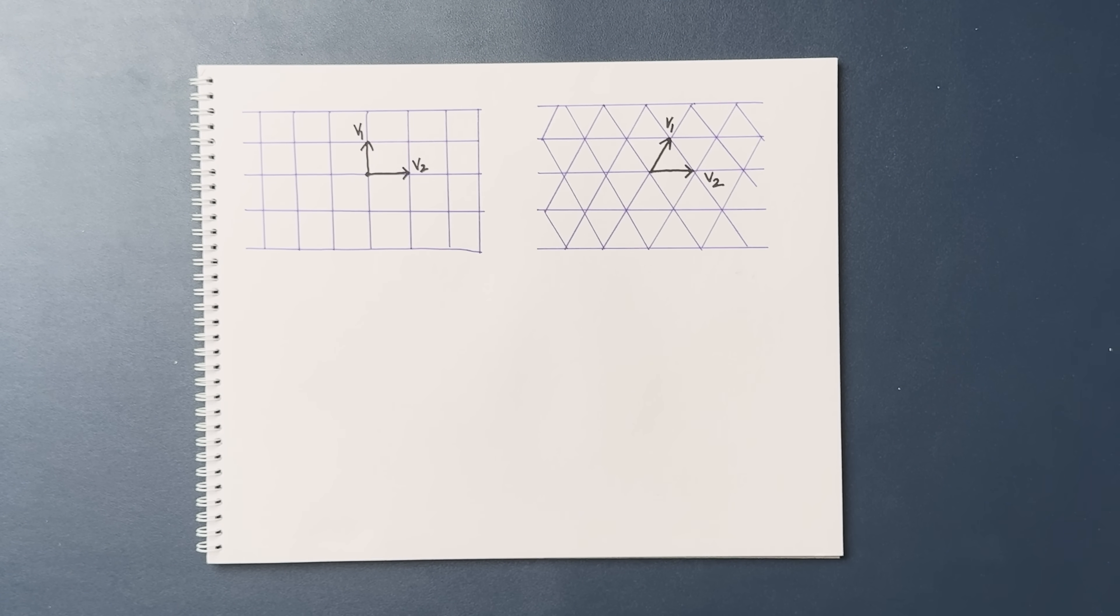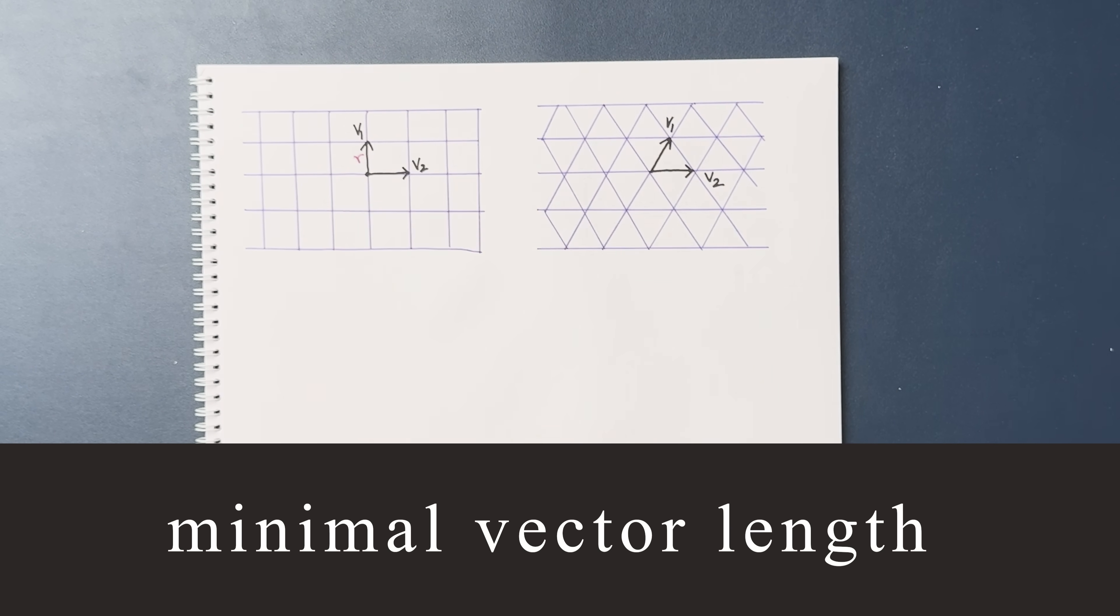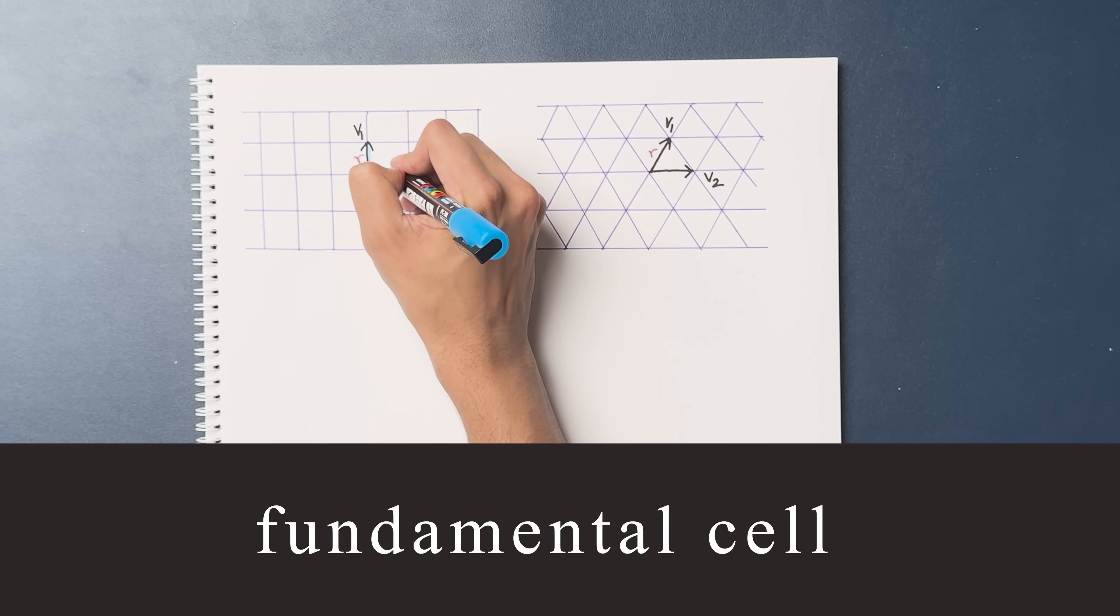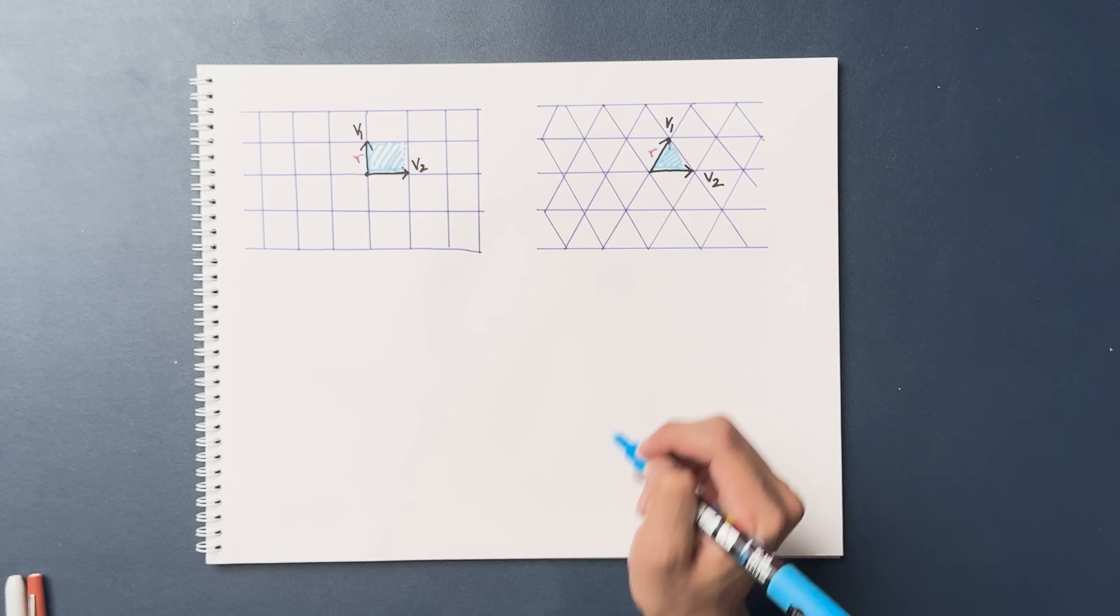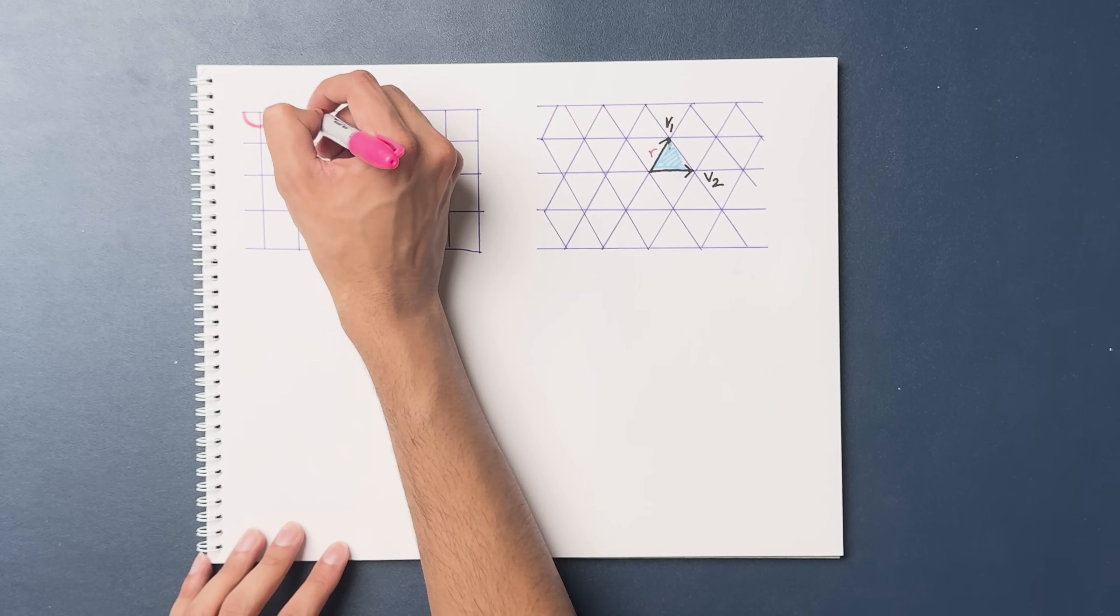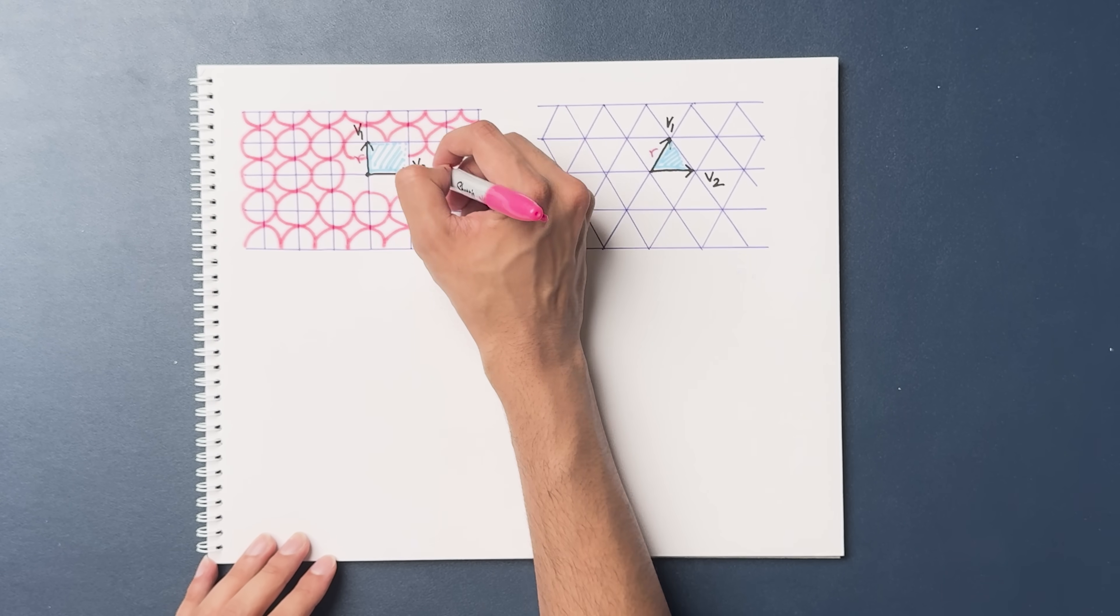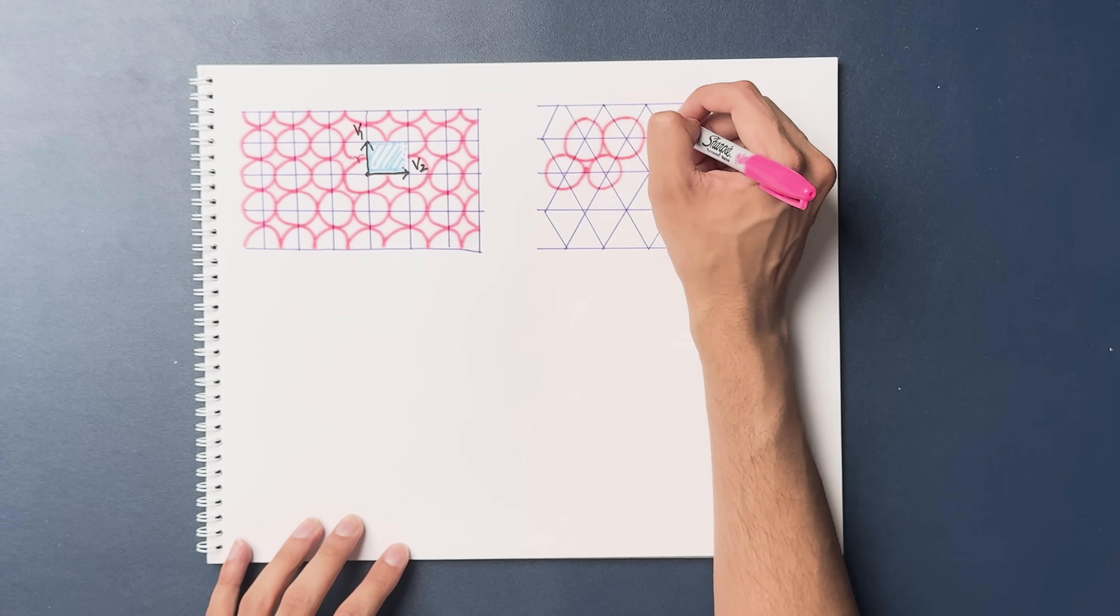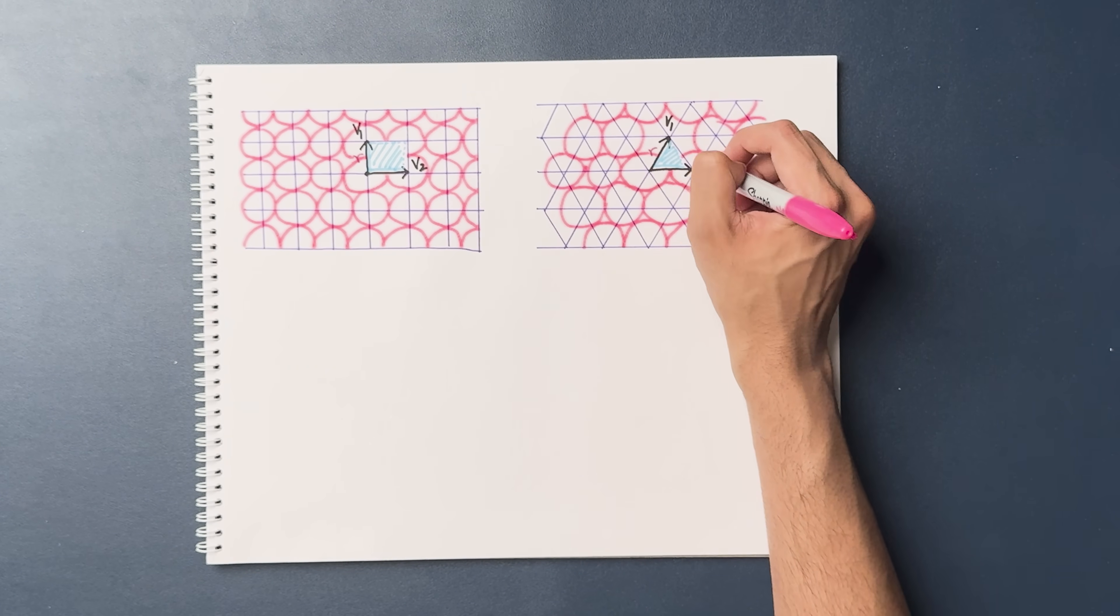Some terminology. The length of the smallest vector in this basis is called the minimal vector length of the lattice. Let's call it r. And this square containing both of the basis vectors is called the fundamental cell of the lattice, which I'm shading in blue. Lattices are important because every lattice determines a sphere packing. How so? We'll just place a sphere centered at each point. If the minimal vector length is r, then each sphere will have radius r over 2.